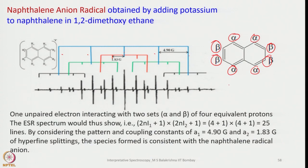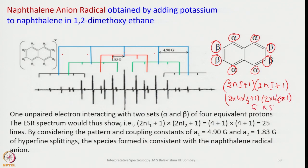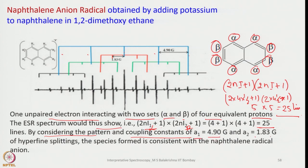One can also calculate using (2N1i+1)(2N2i+1): (4+1)(4+1) = 25 lines. One unpaired electron interacting with two sets — alpha and beta — of 4 equivalent protons each. The ESR spectrum thus shows 2N1i+1 for alpha and 2N2i+1 for beta, giving 5×5 = 25 lines. By considering the pattern and coupling constants a1=4.90 G and a2=1.83 G of the hyperfine splittings, the species formed is confirmed to be the naphthalene radical anion.